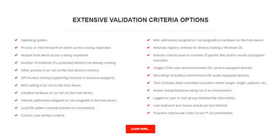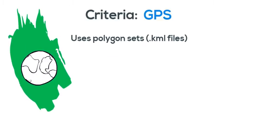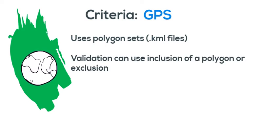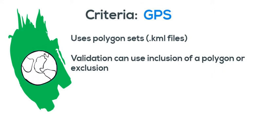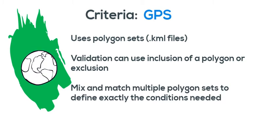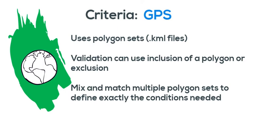Let's try another example selecting a different criteria group. Let's use GPS location. GPS uses polygon sets to find one or more areas. Validation can use inclusion of a location or exclusion — meaning valid if the location is within the polygon, or valid only if it's not within the polygon. Again, these can all be mixed and matched to meet your needs, as well as being mixed and matched with any other criteria.